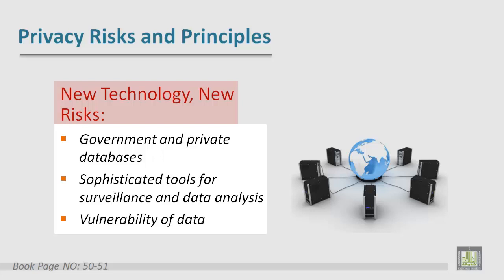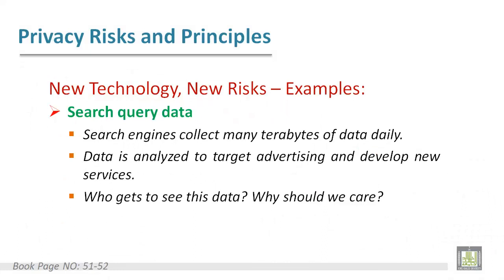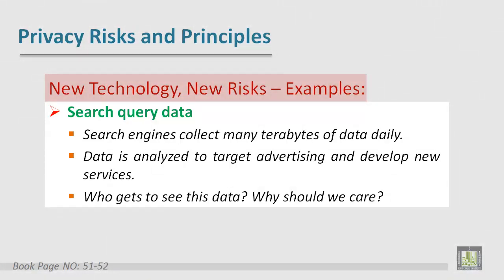New technology could affect privacy and cause new risks. Examples of these new technologies include government databases, sophisticated tools for surveillance and data analysis such as cell phones, camera vulnerability, and data collection. The first example is search query data — in search engines, a lot of data can be collected and analyzed.